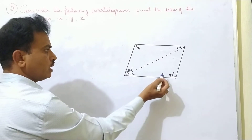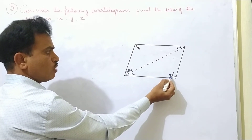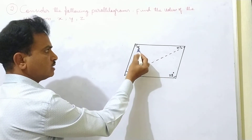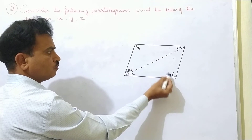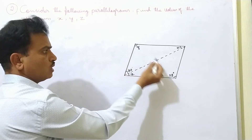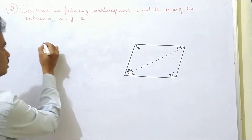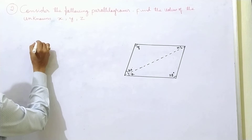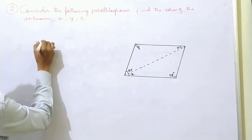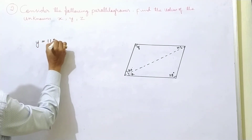Now, we know that in a parallelogram, opposite angles are equal. So Y is equal to 112 degrees.